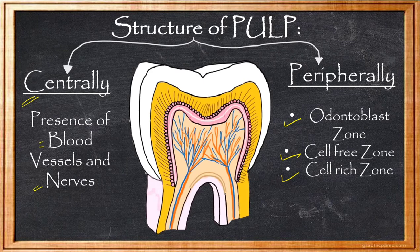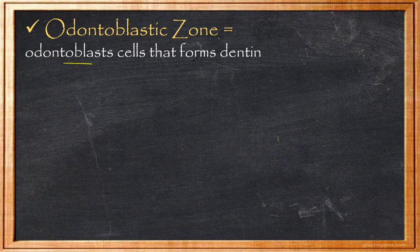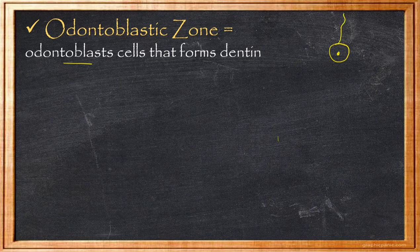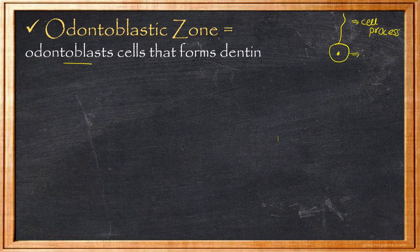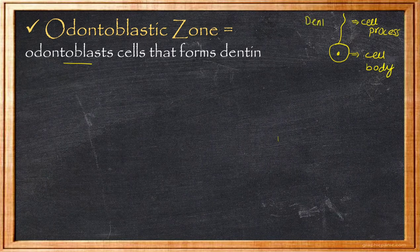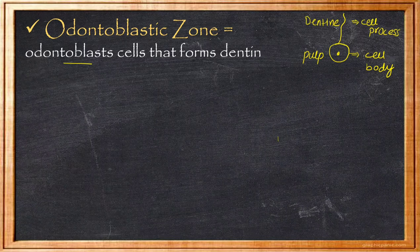Moving on to each zone in detail: in the Odontoblastic zone, Odontoblast cells are present, and their cell processes are present in the Dentine. The Odontoblast cells bodies are located in the Odontoblastic zone of the pulp, while the cell processes extend into the Dentine tubules, where they secrete dentine.